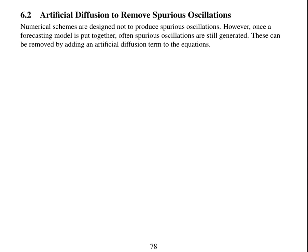So numerical schemes and advection schemes are designed not to produce spurious oscillations. However, once a forecasting model is put together, often spurious oscillations are still generated. And these can be removed by adding an artificial diffusion term to the equations.